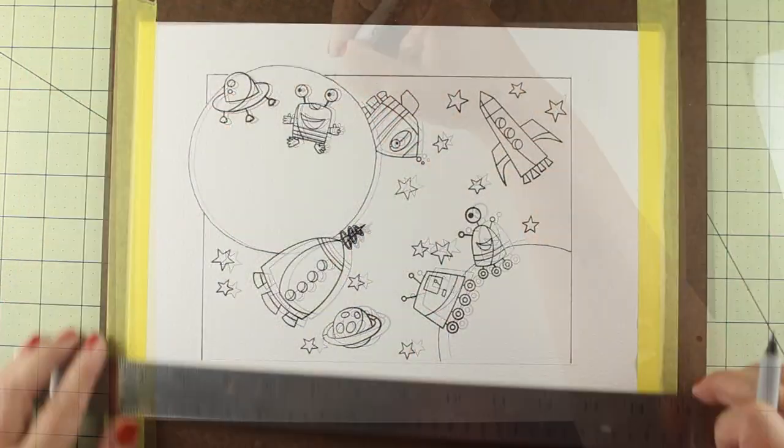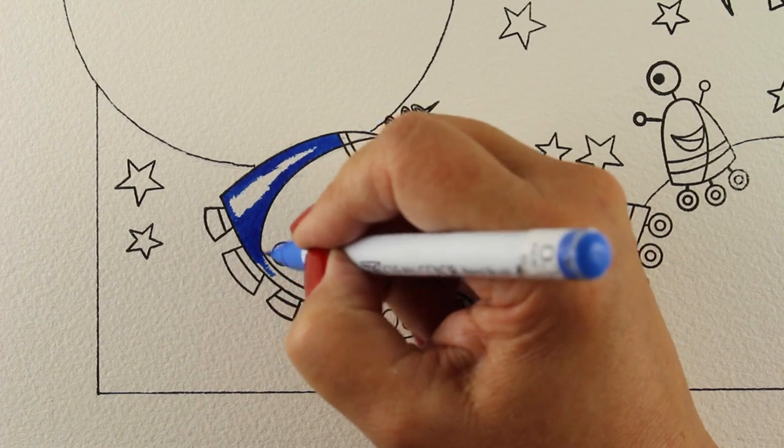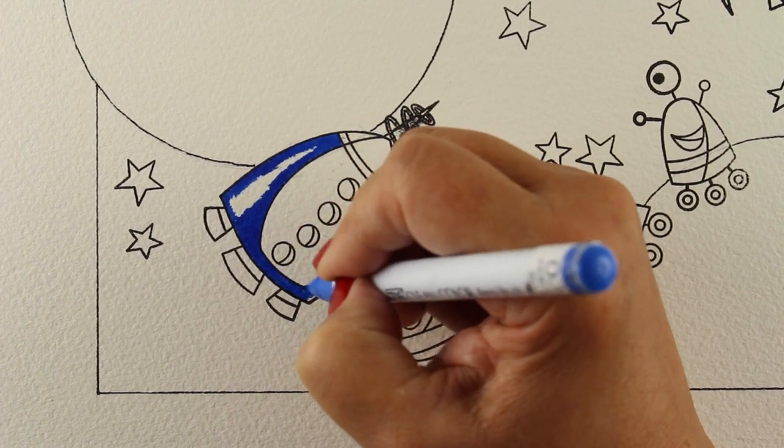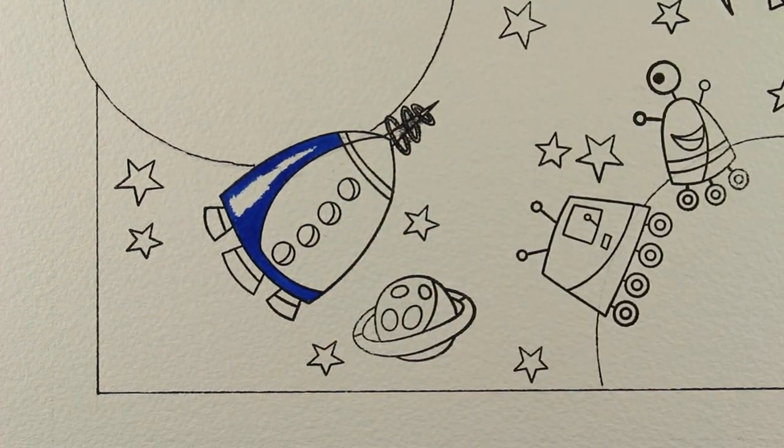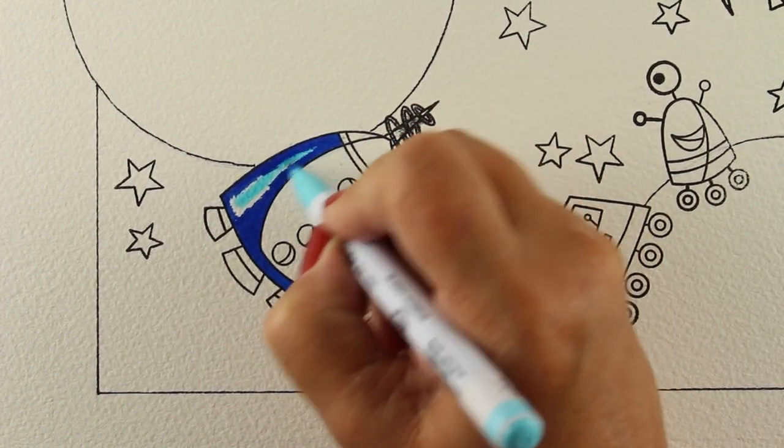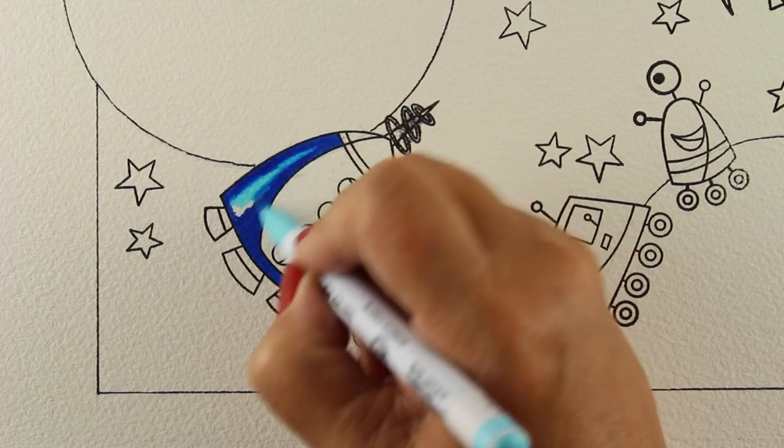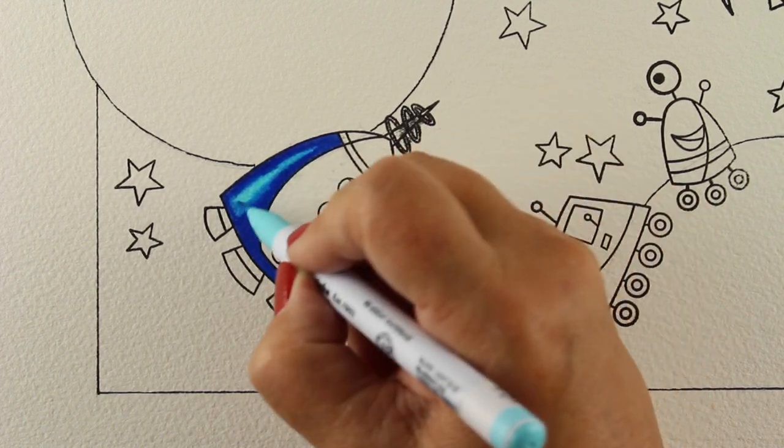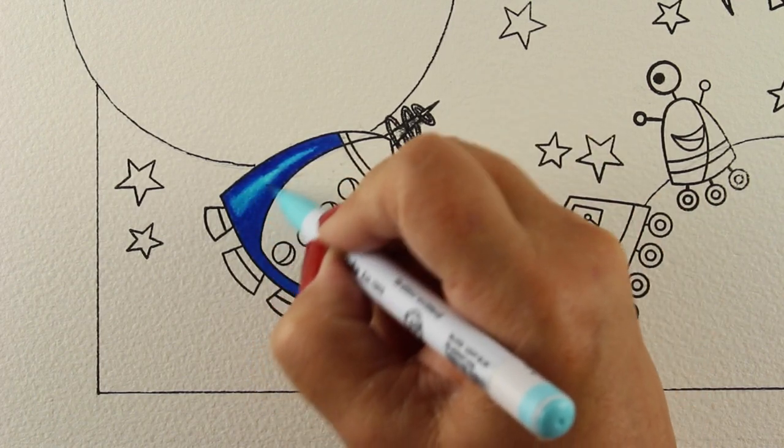Now I'm going to just go over all of my pencil lines with a Sharpie, which is waterproof. I'm using Zig Clean Color Real Brush Markers because they have very intense colors. They do blend without water, at least most of them do. What I like to do is color the dark color, leave a space for the light.